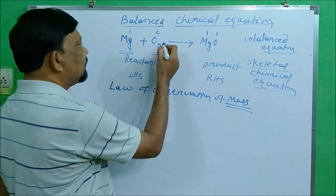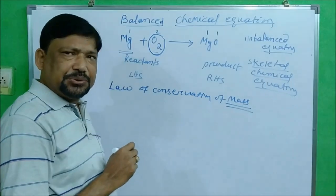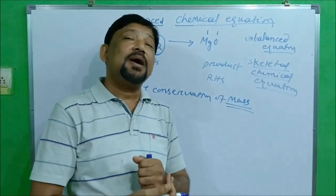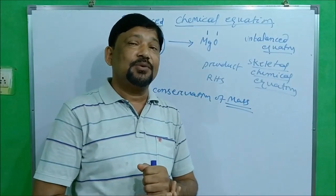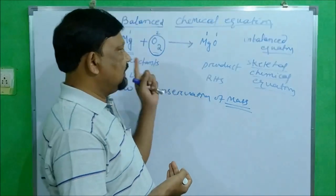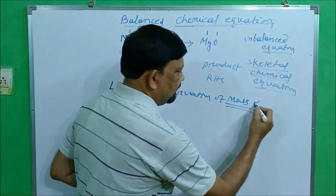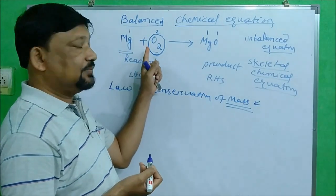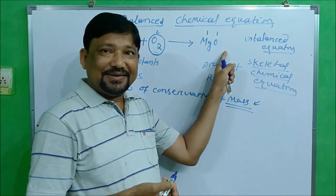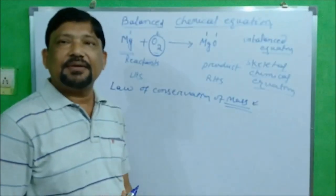For example, the oxygen mass on the LHS is 2, but on the RHS it is 1 — so where did the other 1 go? This equation is not balanced as per this law either, because mass cannot be created or destroyed. Here it appears destroyed, so this is an unbalanced equation.